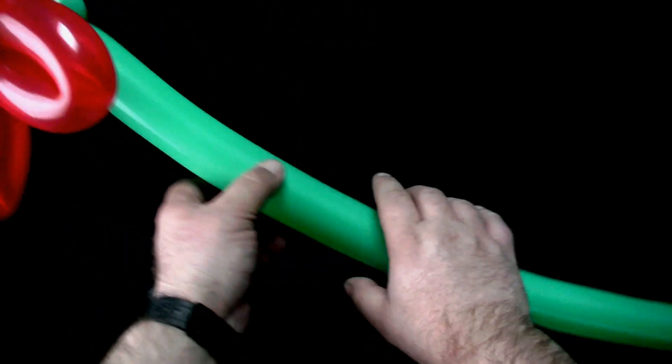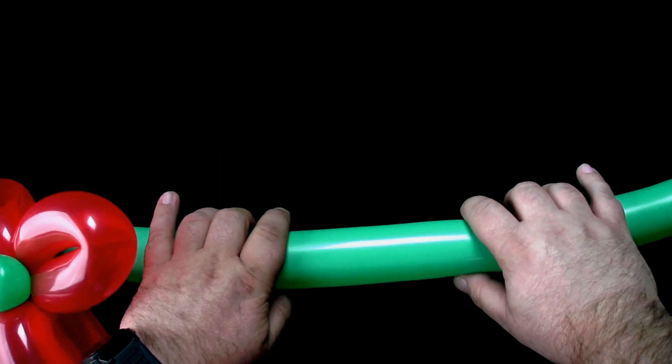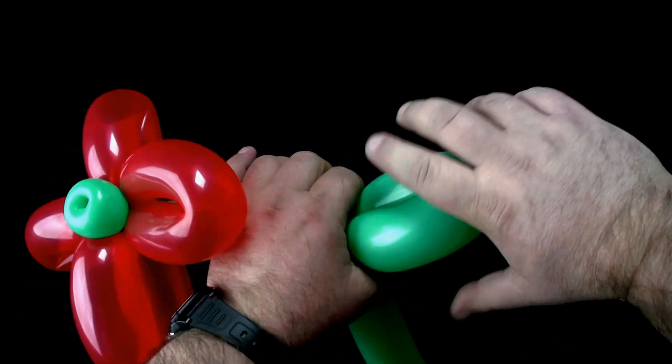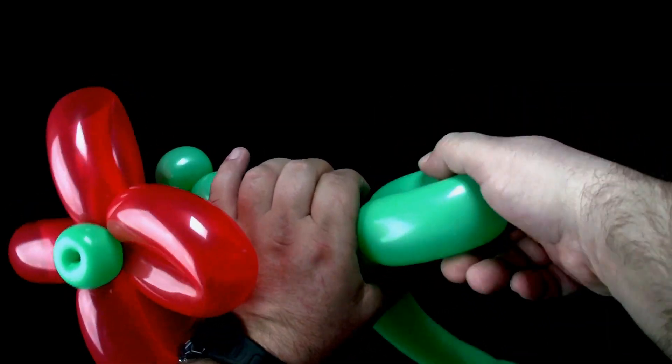About one-third down the balloon, make a loop twist. Make another loop twist the same size as the first one.